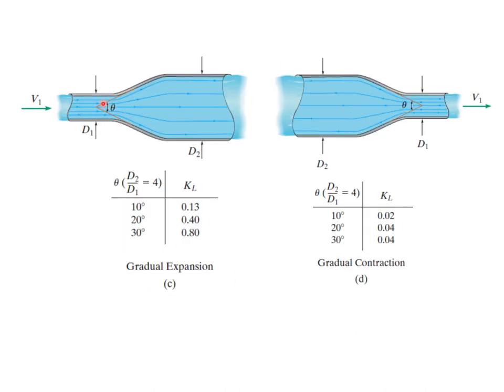For certain situations where it's not sudden, it's an angle kind of transition. There's tables for those K sub L values as well.